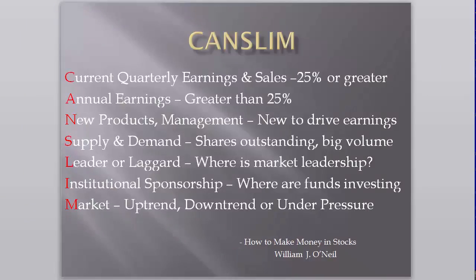Much of what we do at Pushbutton Stock Trading is based in part or in full on William O'Neill's classic book, How to Make Money in Stocks. O'Neill utilizes the acronym CAN-SLIM to identify the important elements of what he's looking for in a trade. The C in CAN-SLIM stands for Current Quarterly Earnings and Sales, and reminds us that we should be looking for stocks that have a minimum of 25% year-over-year increases in quarterly earnings and/or sales, and preferably accelerating earnings or sales.